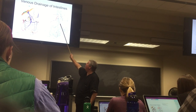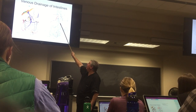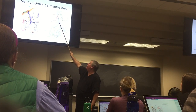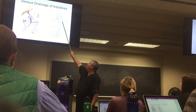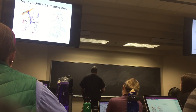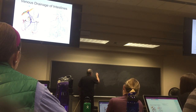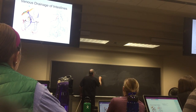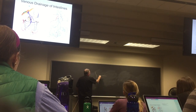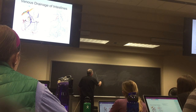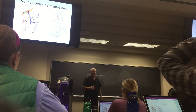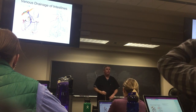Right here you can see the inferior mesenteric joining at the junction of the superior mesenteric and the splenic. It can actually occur anywhere along there — so it's highly variable where the inferior mesenteric joins the system.